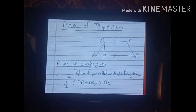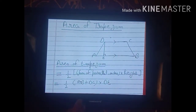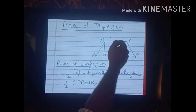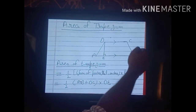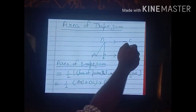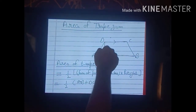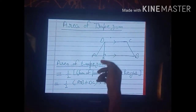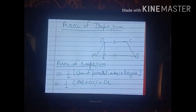Before starting the next parts, we need to understand the area of a trapezium, since all the next parts are related to it. In trapezium ABCD, two sides are parallel (AB and CD) and two sides are non-parallel (AD and BC). The perpendicular DE drawn on AB is called the height, and AB is the base.